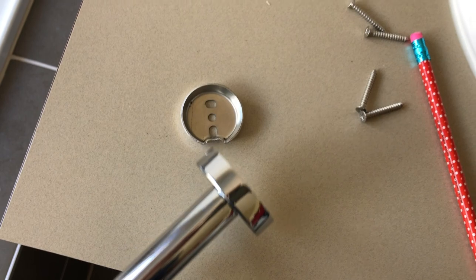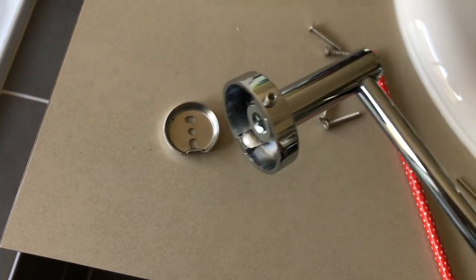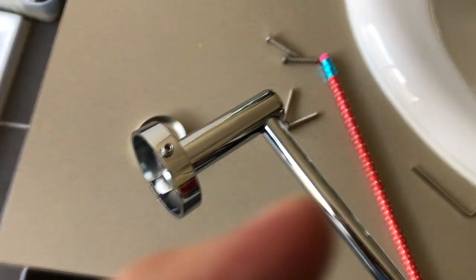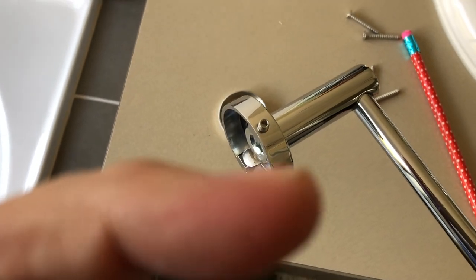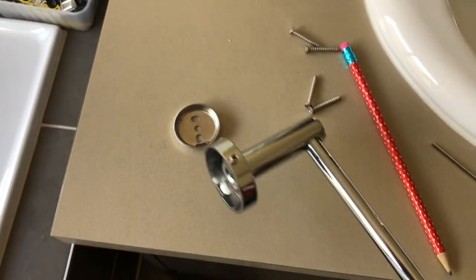So step one is to mount these discs, and then step two, you simply push this in place and do up that little grub screw with an Allen key and it stays on. So we'll show you the mounting.